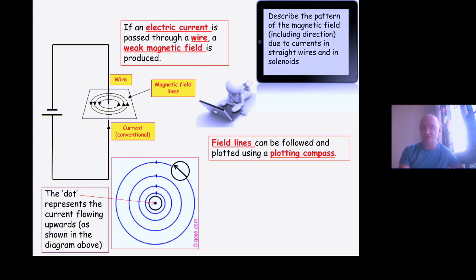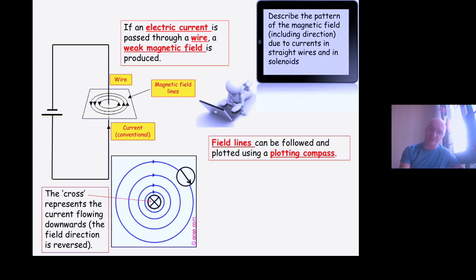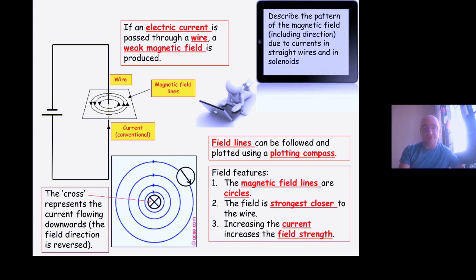We can see the field lines using two methods: plotting compass and iron filings. On the features of the field, magnetic field lines are in circles, concentric circles. They are ever getting larger as they go from the central wire. It's strongest the closer to the wire you get, and weaker the further away from the wire you get. And if I make the current stronger, I increase the strength of the field which is created by the traveling of any current in a wire.